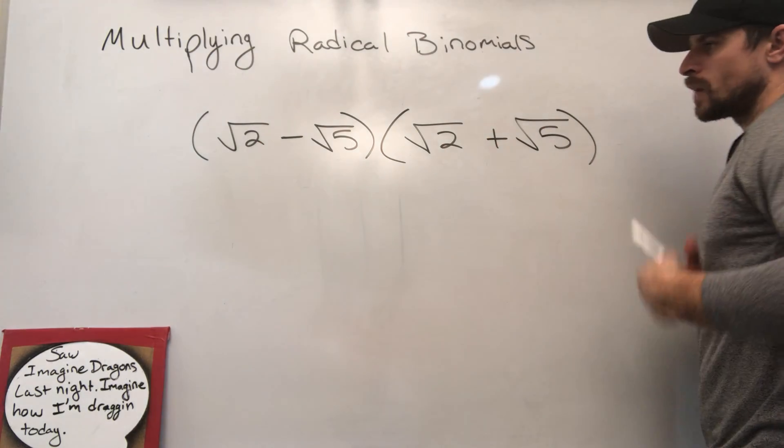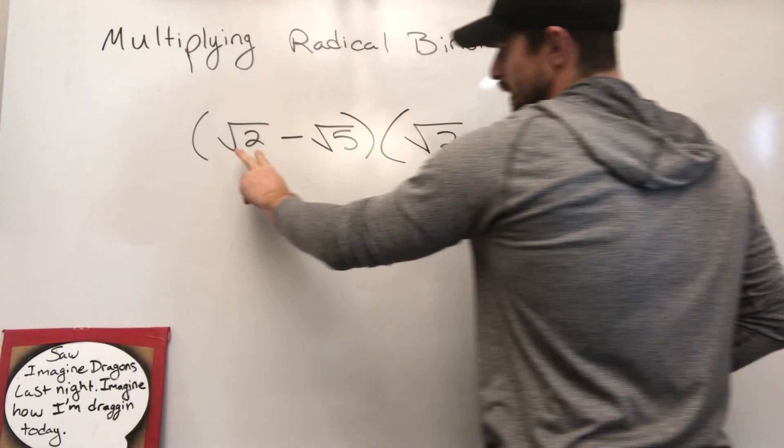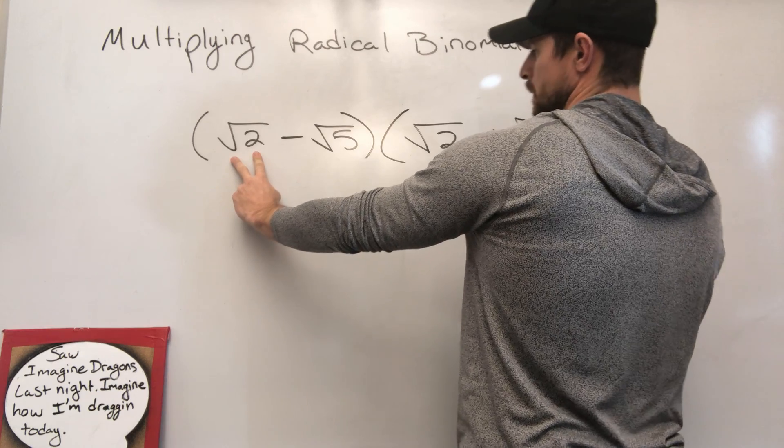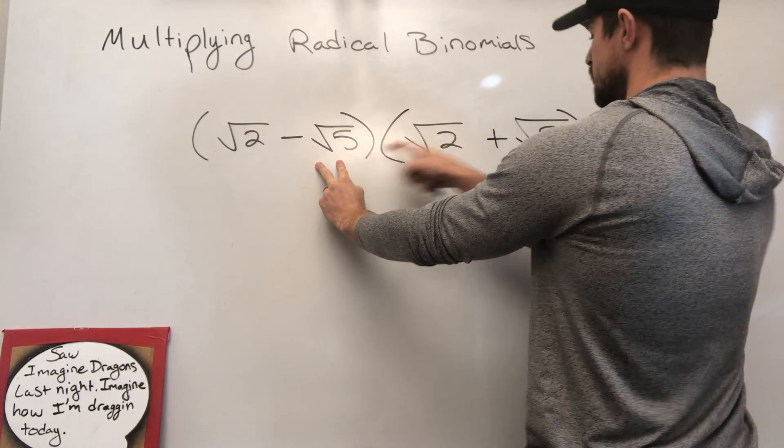We're going to multiply them together. So if I'm going to multiply both of these terms times both of these terms, I know that the square root of 2 needs to multiply by both over here. I also know that negative 5 is going to need to multiply by both of these terms over here.